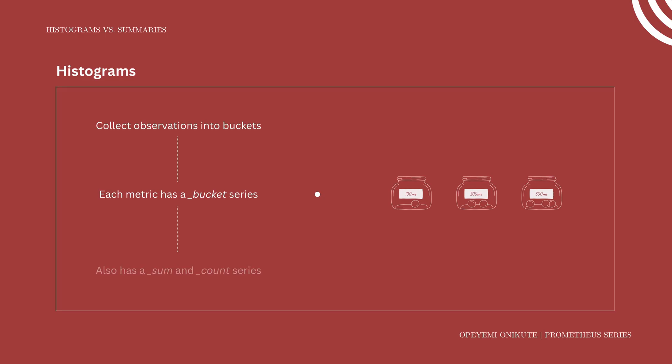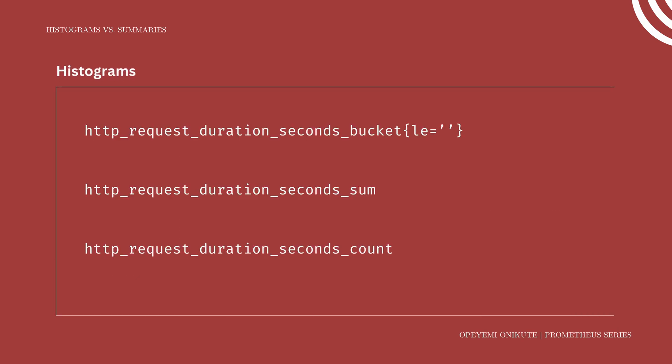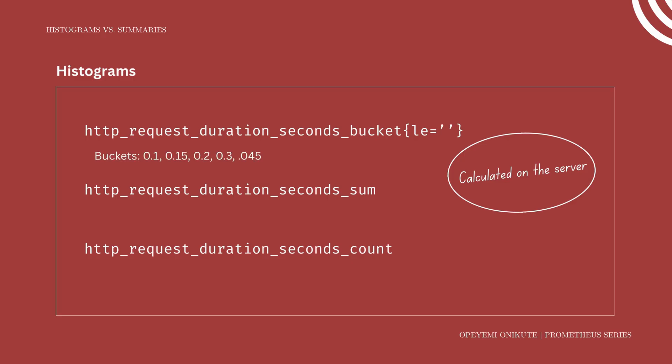Histograms also expose a count time series representing the total number of observations, and a sum series representing the total of all observations. In Prometheus, histograms are computed on the server, not the client. This allows histograms to be aggregated across labels before calculating percentiles. However, you are responsible for deciding what bucket boundaries you care about — poorly chosen buckets can lead to errors when approximating percentiles.